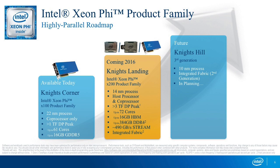If you've seen Knight's Corner — the Xeon Phi co-processor — the Knight's Landing processor is a natural evolution of that concept. We forget about the co-processor form factor and just make it its own bootable processor. It delivers more than 3 teraflops of peak performance. There are 16 gigabytes of high-bandwidth memory. The weak points of Knight's Corner should have been fixed for Knight's Landing.